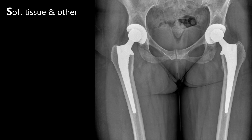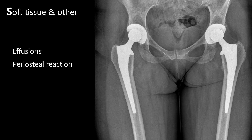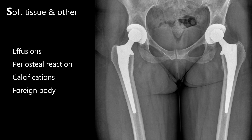To finish off our assessment, we assess soft tissue and other. Here, we're looking for any effusions, for example in inflammatory joint diseases like rheumatoid arthritis. We might also see signs of periosteal reactions, which could be a result of healing fractures or cancer. Calcifications, for example phleboliths or arterial calcifications. And foreign bodies, like you can see here in the form of bilateral total hip replacements. A total hip replacement means both the femoral head and the acetabulum have been replaced. A partial hip replacement, or hemiarthroplasty, involves just replacing the femoral head.